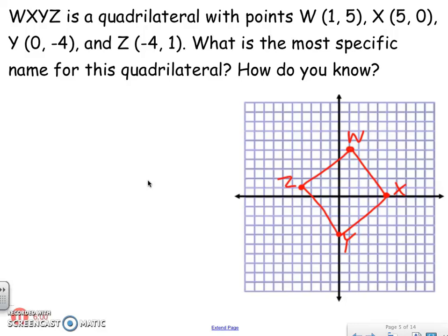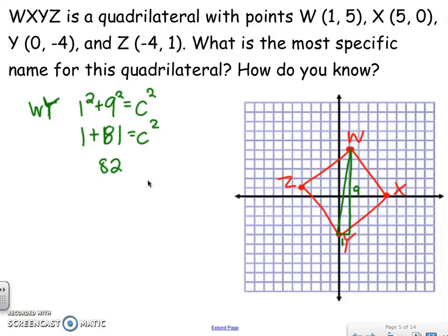The diagonals are WY and XZ. To find the distance of WY, I draw a right triangle where one side is 1 and the other is 9. So 1² + 9² = c², giving 1 + 81 = 82, and the square root of 82 is approximately 9.06. That is the distance of WY.